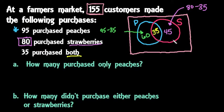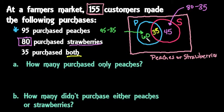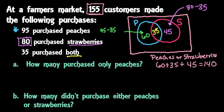We had 155 total customers, so the parts inside both circles plus the outside value must total 155. For peaches or strawberries, we add 60 plus 35 plus 45, which equals 140. So 140 customers purchased peaches or strawberries. To find the outside portion, we take 155 minus 140, which tells us that 15 people did not purchase peaches or strawberries.